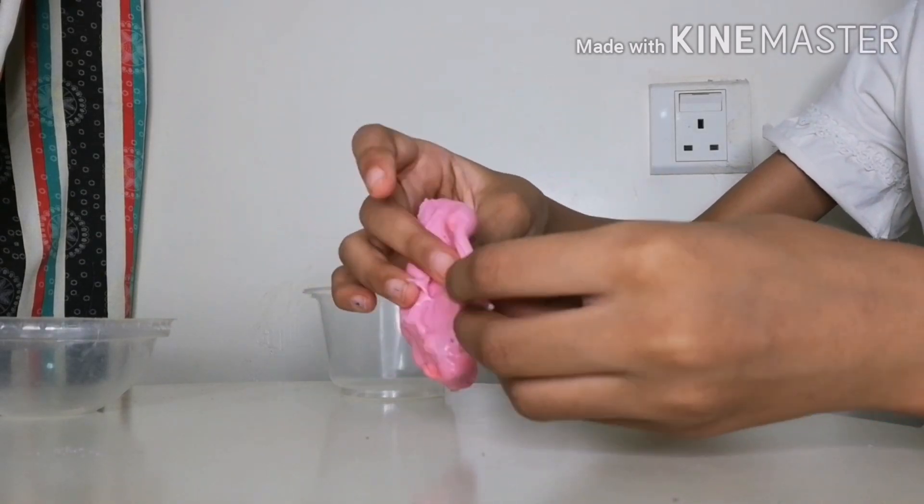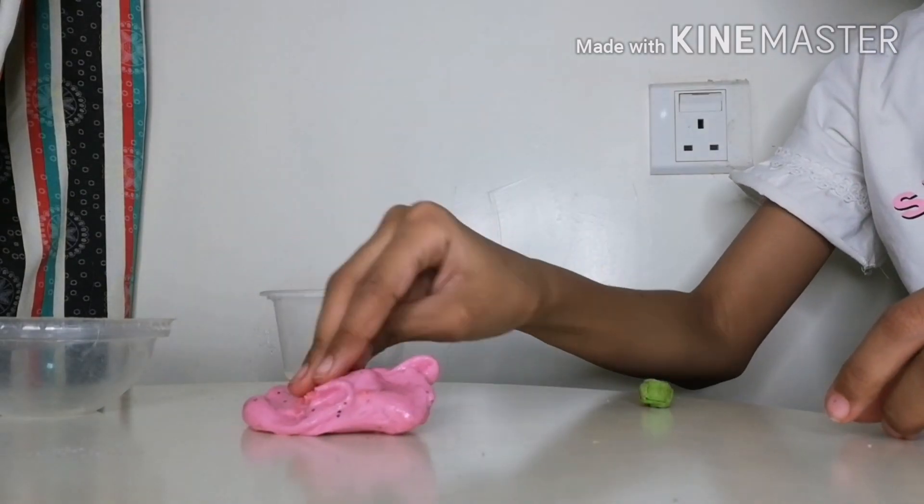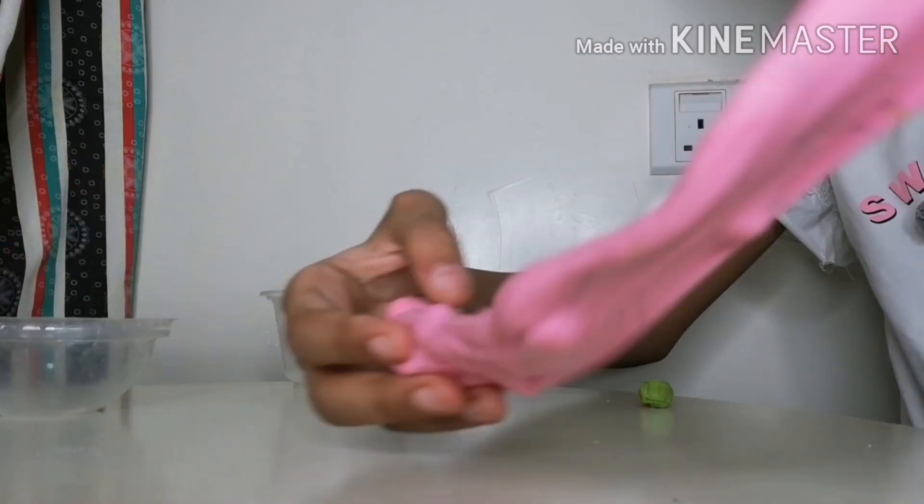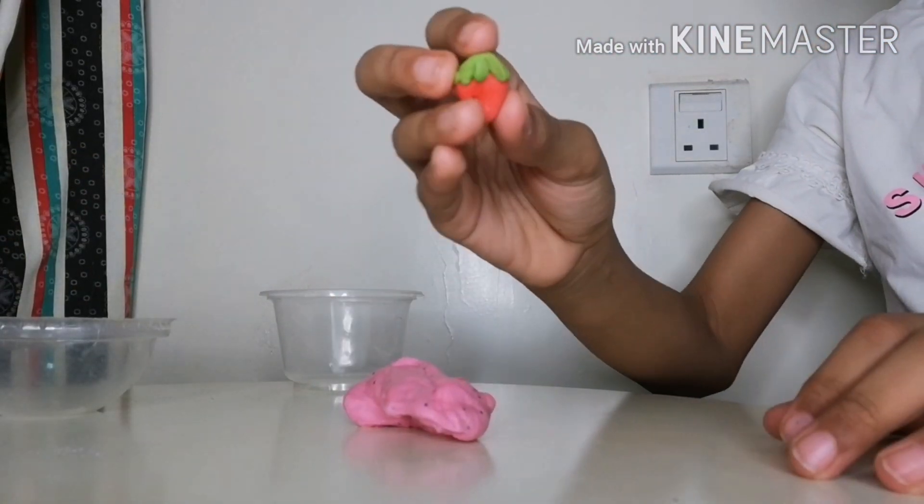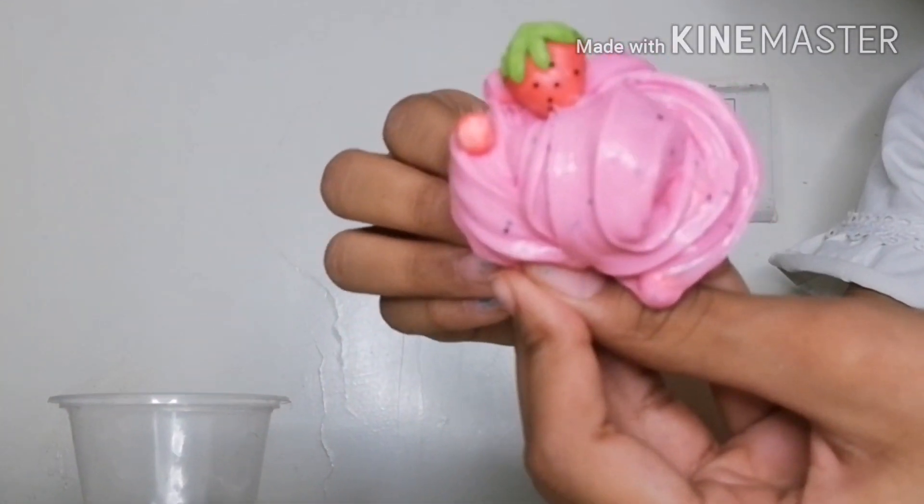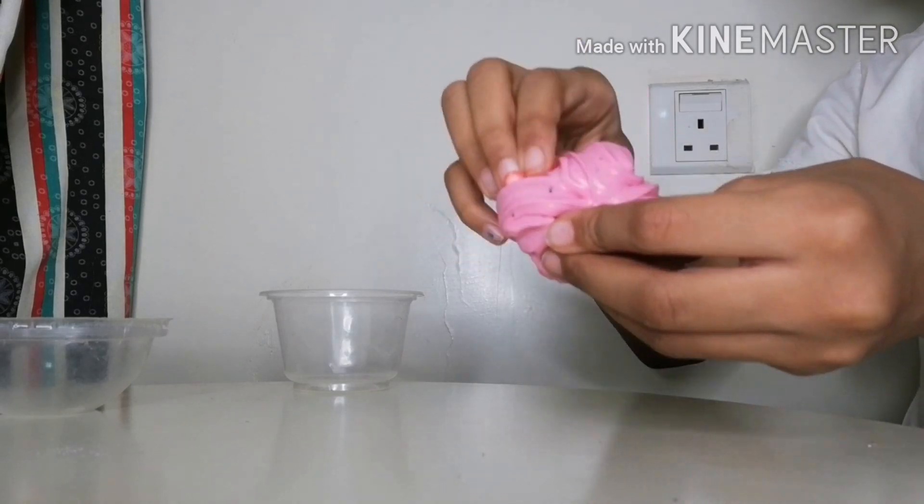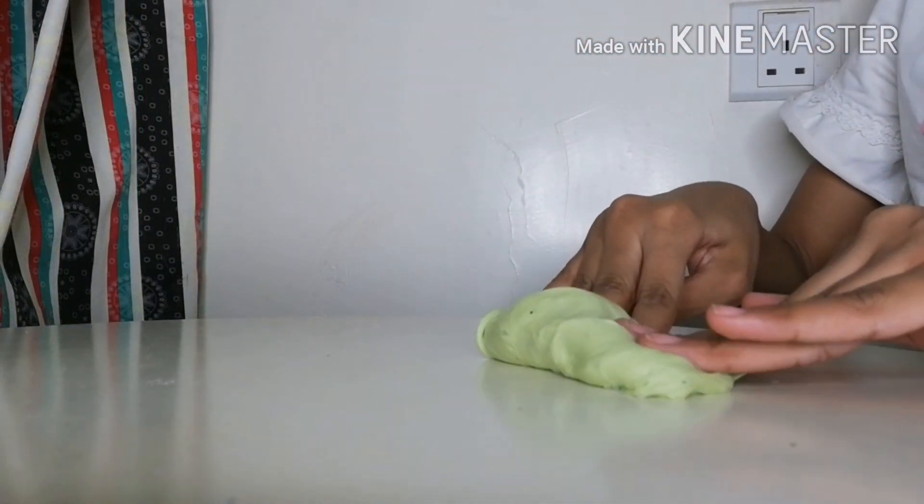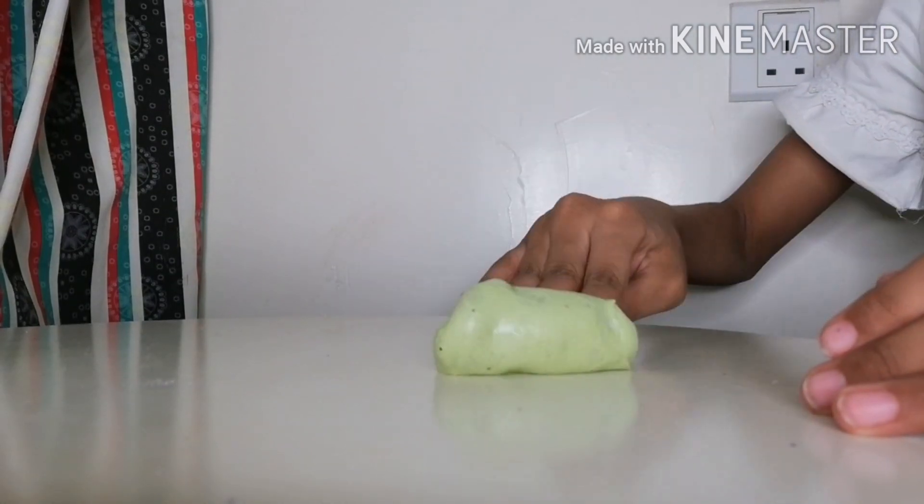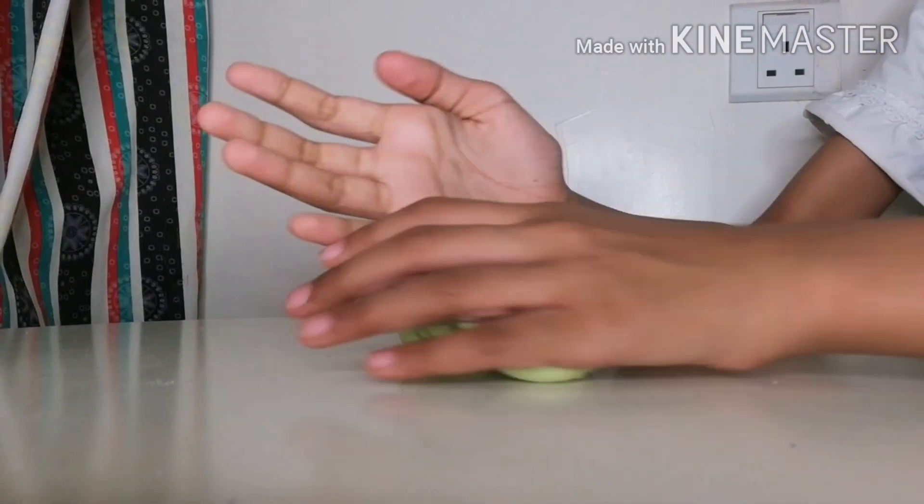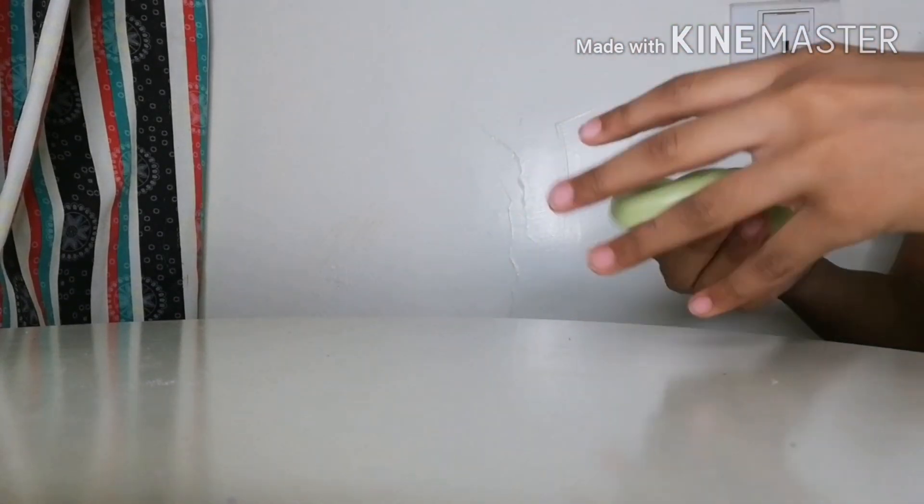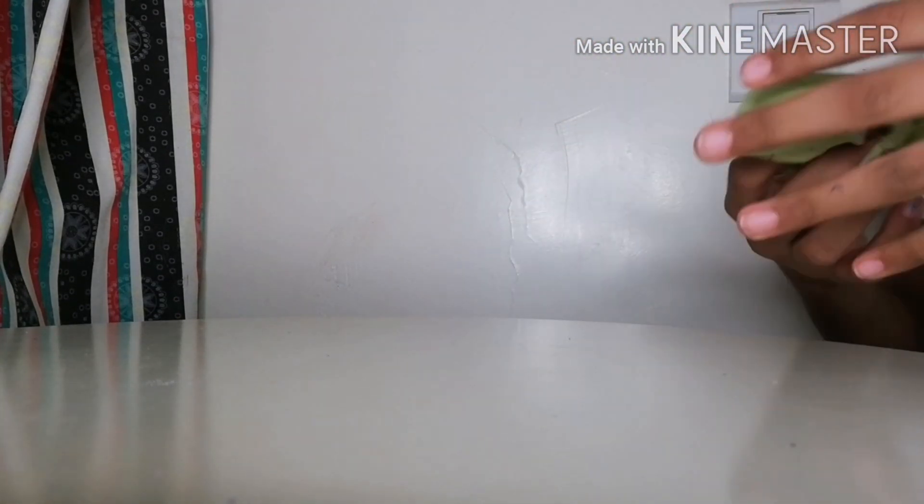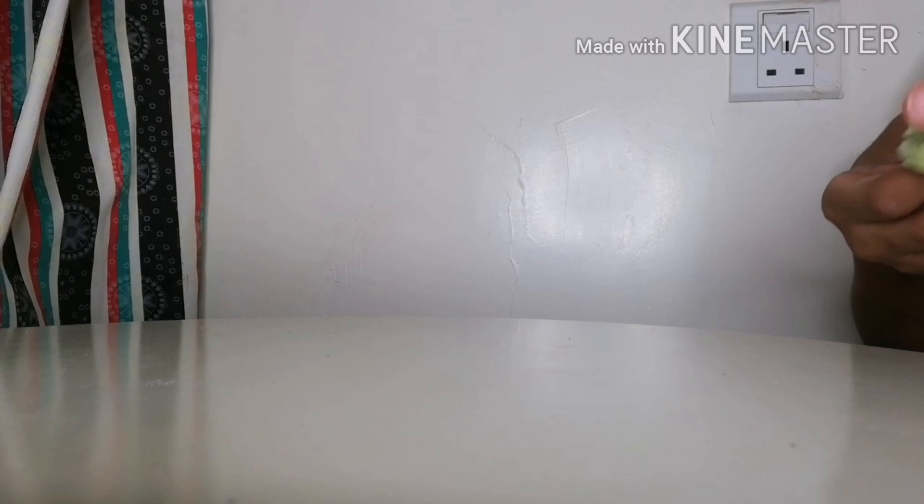Now onto this lemon themed slime. It's a pastel green color, has some black glitter, and the texture is kind of close to the banana slime.